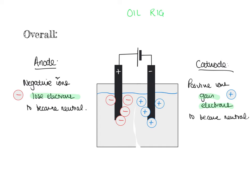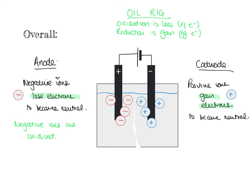We can give these processes special names. OIL RIG is your way to remember: Oxidation Is Loss of electrons, Reduction Is Gain of electrons. At the anode we have loss of electrons, so negative ions are oxidised. At the cathode we have gain of electrons, so positive ions are reduced. That's just another way of saying negative ions lose electrons and positive ions gain electrons, and you need to be able to use that language.